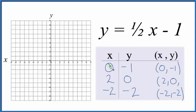So we go to zero here for x and y, that's negative one. That's our first point. We have x is two, y is zero.